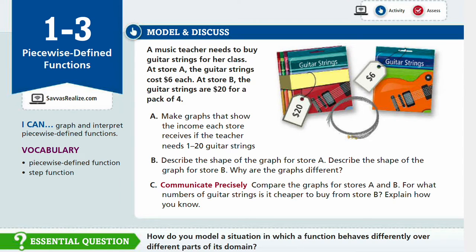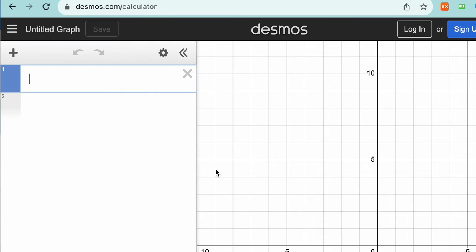So in order to make the graph, we want to write an equation for a guitar string. At store A, you would represent Y as the cost and X as the number of guitar strings. So 6 per guitar string. And then your store B would be a different graph. You might not be able to come up with an equation right away, but let's graph the first one.